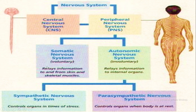The Somatic Nervous System is Voluntary. It relays information to and from the skin and skeletal muscles. Voluntary actions are those we consciously control in our body. That is the Somatic Nervous System.